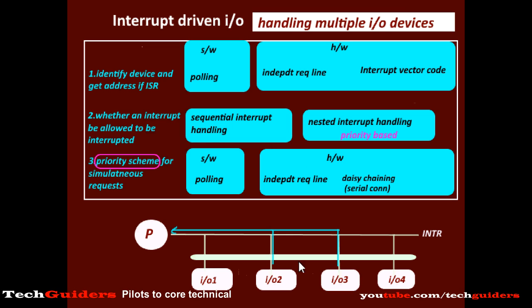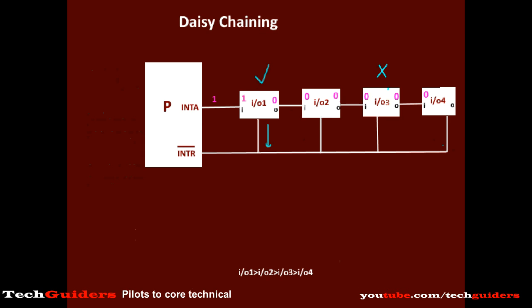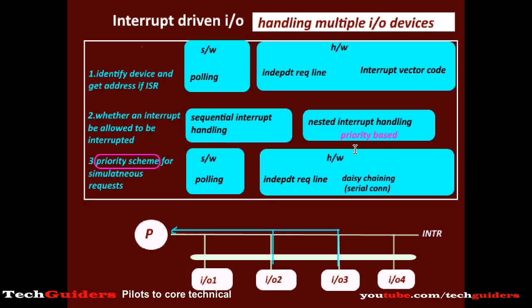Compared to polling or the software-based approach, once the priorities are determined and the chain is set up, this is a much faster method. And compared to the method of separate request and acknowledgement lines, here we need fewer bus lines or fewer wires.